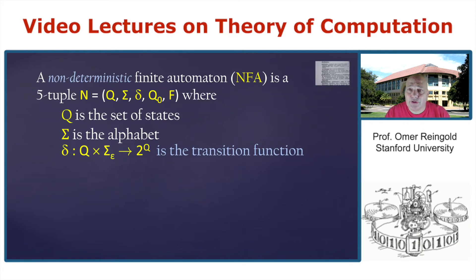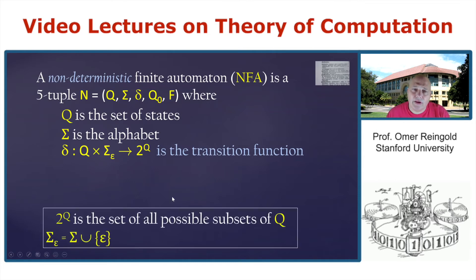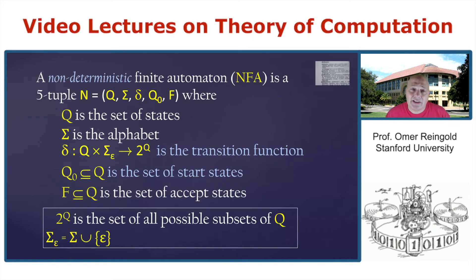So these are all the states you can reach when reading Q and the particular symbol. So 2^Q is a set of all possible subsets of Q. And sigma epsilon is sigma union epsilon. Q_0 is the set of start states. So now we allow more than a single state. And F is again the set of accept states. So this is how you specify formally an NFA. And we need to again define what are the languages accepted by the NFA.